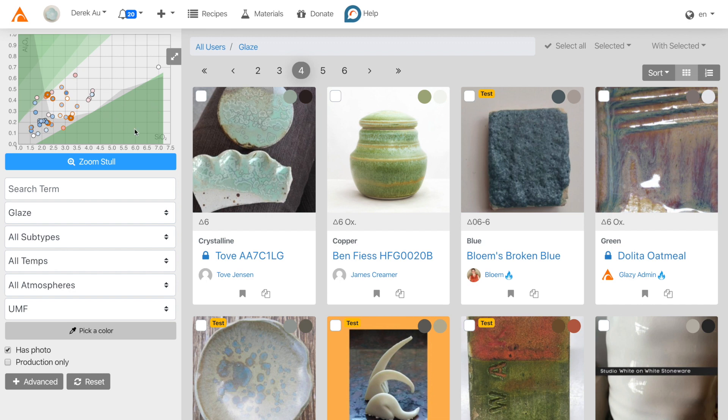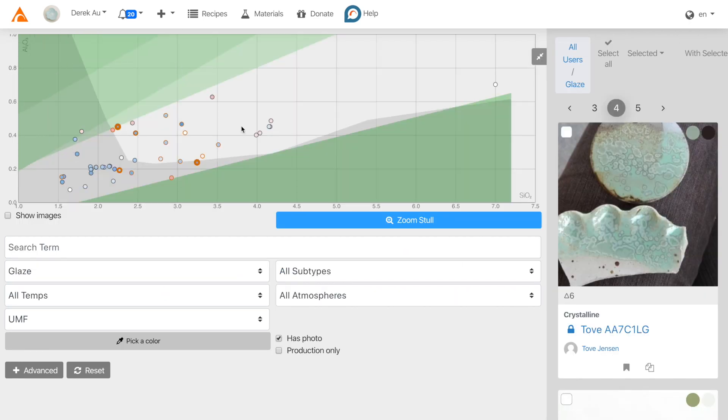When looking at this chart on glazy, we can expand the map by clicking this button. As you browse glazy, you will notice that most of the recipes fall within the bright region, while semi-matte and matte glazes fall within this area.